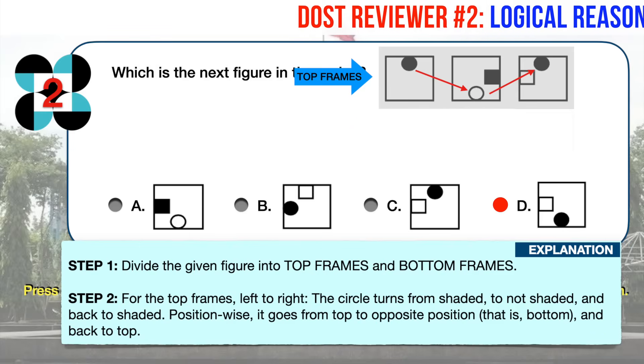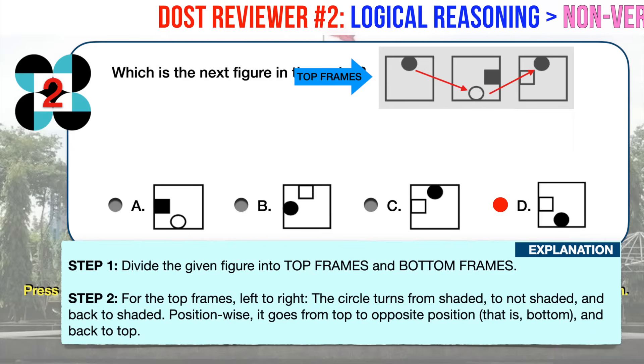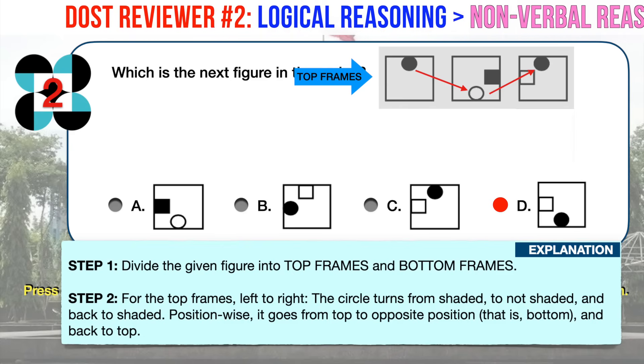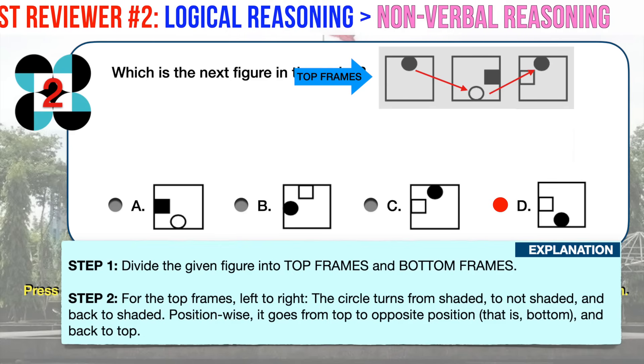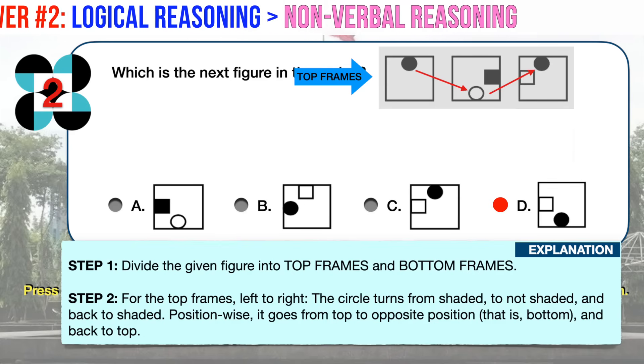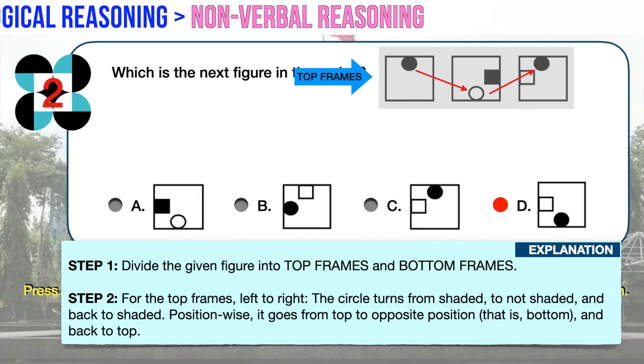For the top frames, left to right, the circle turns from shaded to not shaded and back to shaded. Position-wise, it goes from top to opposite position, that is bottom, and back to top. The square turns from none in the first frame to shaded on the right to not shaded on the left.